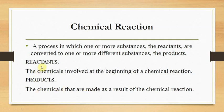Reactants are the chemicals involved at the beginning of a chemical reaction. The chemicals used in a chemical reaction are called reactants, and the substances produced are called products.